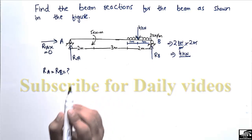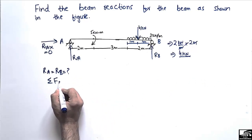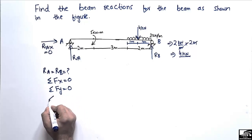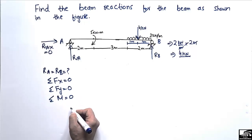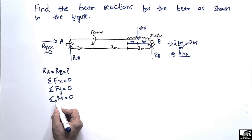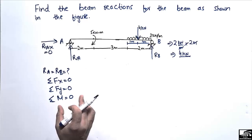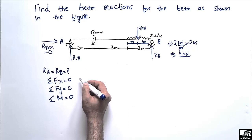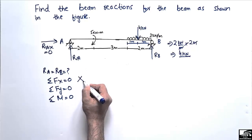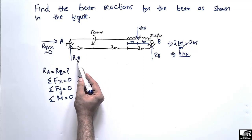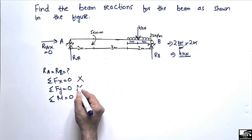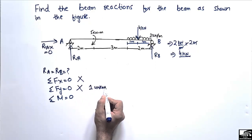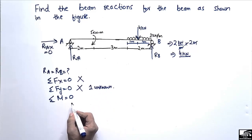Now it is easy to solve the beam. We use three equilibrium equations: summation of horizontal forces equals zero, summation of vertical forces equals zero, and summation of moments at any point equals zero. Since there is no horizontal load, we don't need the first equation. We also can't use the vertical force equation yet because we have two unknowns, RA and RB.